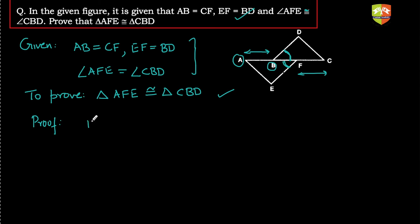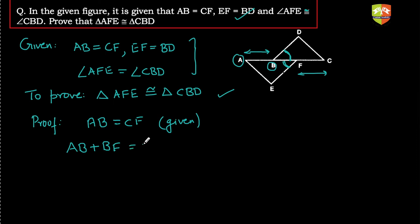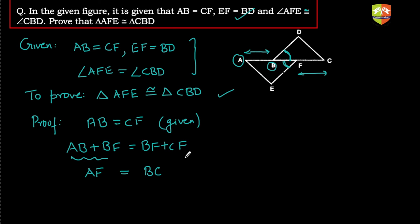AB is equal to CF — that's given. Now if we add BF to both sides: AB plus BF equals CF plus BF. AB plus BF is AF, and CF plus BF is CB. So AF is equal to CB — and this is exactly what we needed to prove.